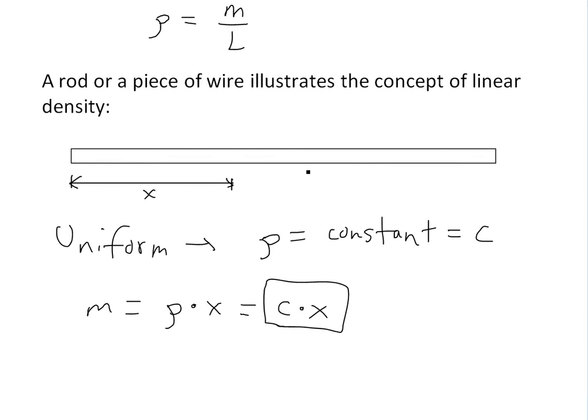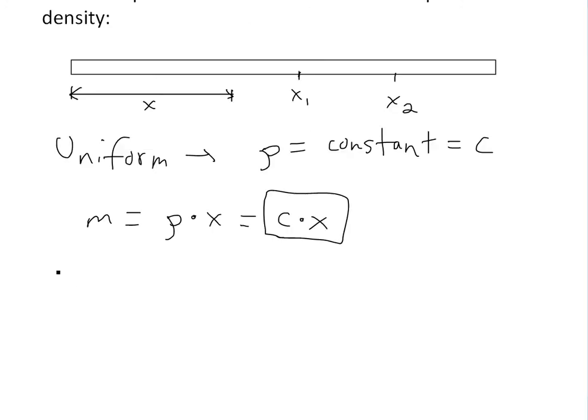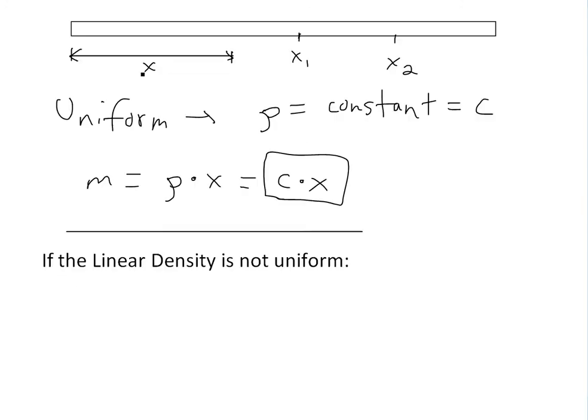But let's say you had something like, let's say at this point it's x1, we'll call this x2. So basically let's say it's not uniform. If the linear density is not uniform, then the function for mass, in this case m equals just a constant times x, so you have mass.